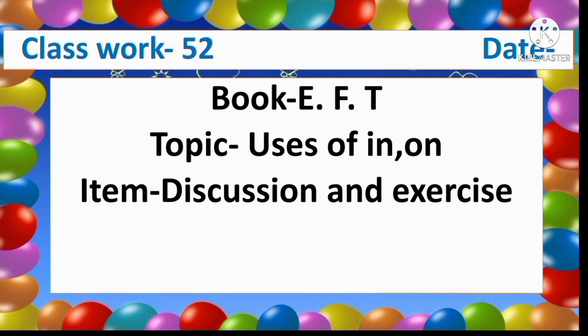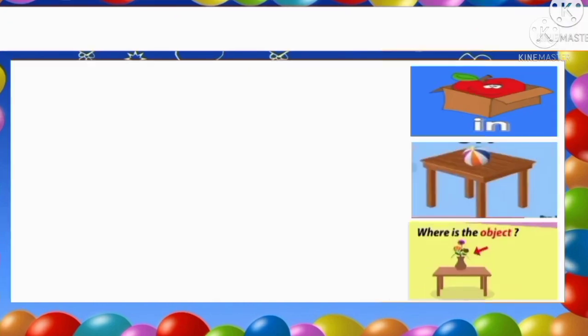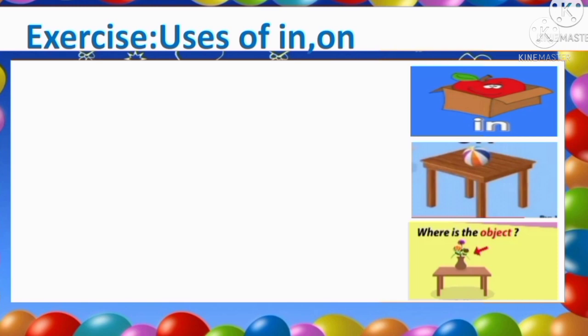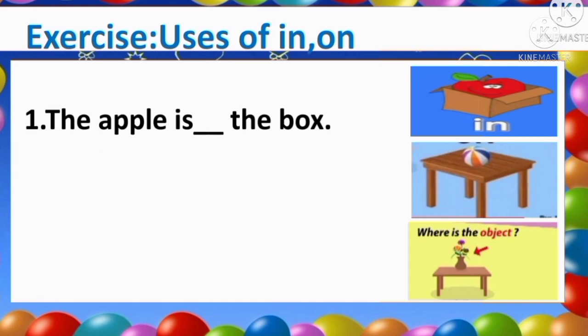Here I am showing three pictures. I will write the sentence beside the pictures. The first sentence — all of you read: The apple is blank the box. Apple and box are naming words. Where is the apple? We can see the apple is inside the box, so it will be 'in'. 'In' is telling about the apple — where is the apple? In the box.